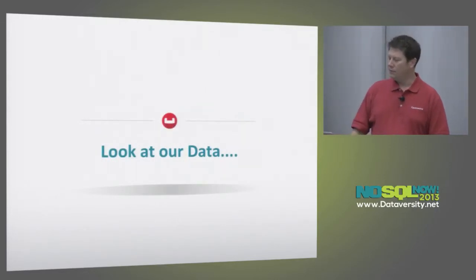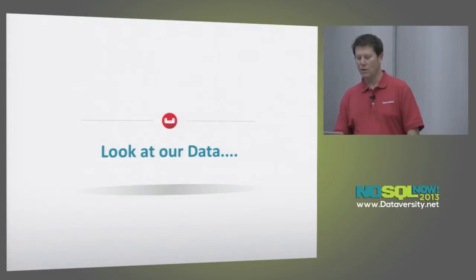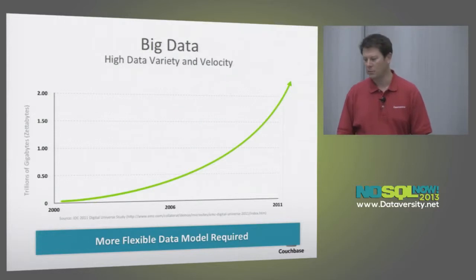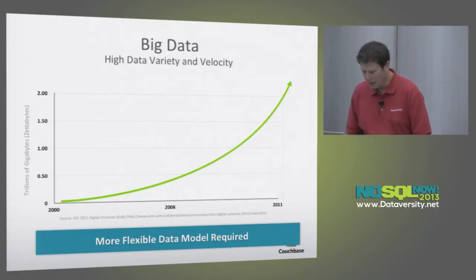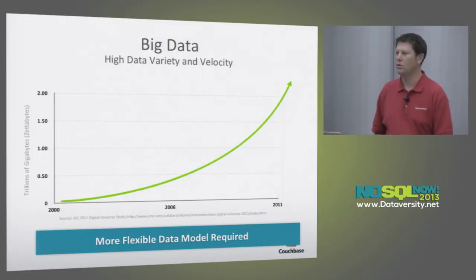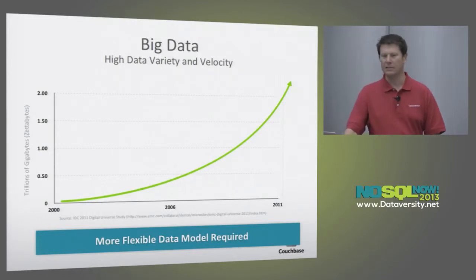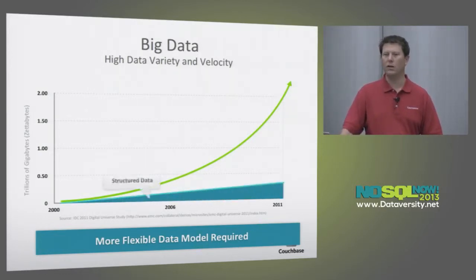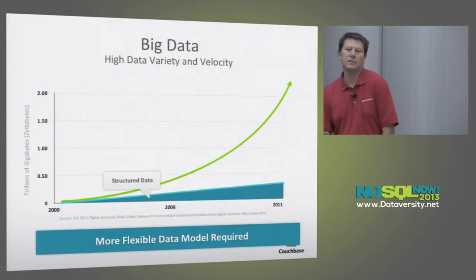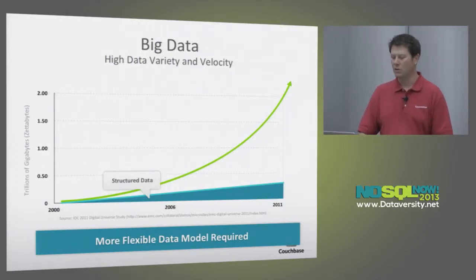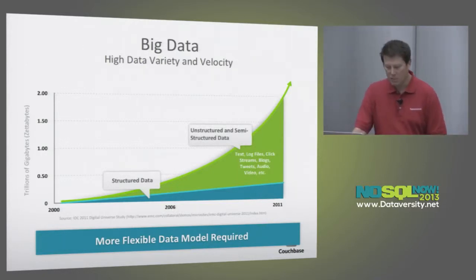From a data perspective, we certainly need a more flexible data model. This IDC study talks about the amount of data required, and what you may notice is that the curve is more exponential than linear or logarithmic — we have a lot more data coming online on a regular basis. The interesting part is that if you look at the amount of structured data, it is relatively linear. The amount of structured data is growing at normal growth patterns. But if you look at the amount of unstructured and semi-structured data — text, logs, log files, click streams, blogs — that's growing very quickly.